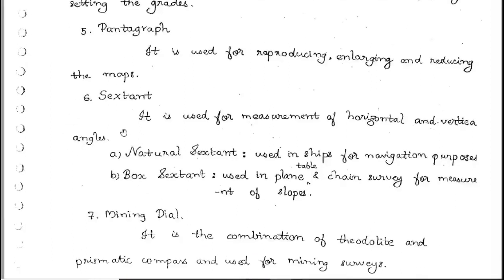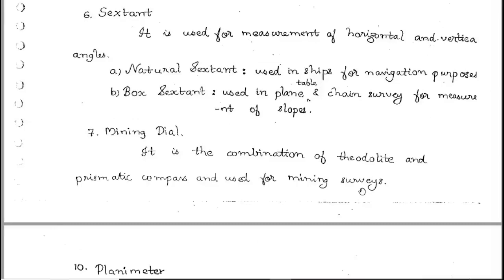There are two types of sextant. The nautical sextant is used in ships for navigation purposes. The box sextant is used in plane table and chain survey for measurement of slopes.